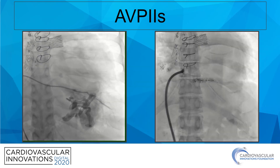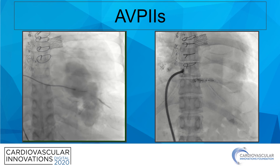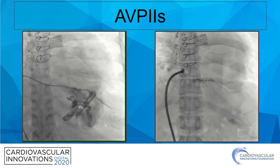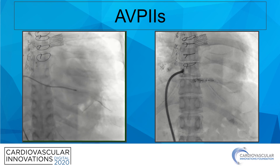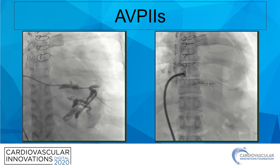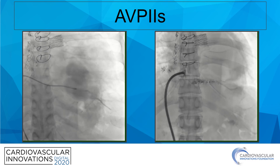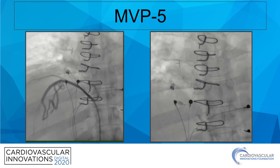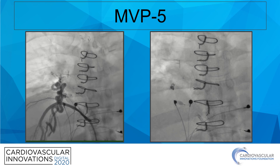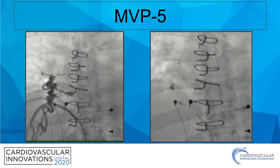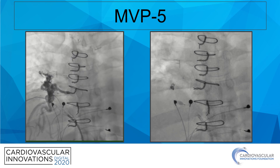Although this overall Fontan patient was quite complex, once my delivery sheath was advanced distally it was simply a matter of deploying multiple AVP-2s to occlude flow. The most proximal disc sits right at the ostium and no residual flow is present. The last case is a good example of how a single MVP, when well sized, can do a great job at immediately occluding the vessel.